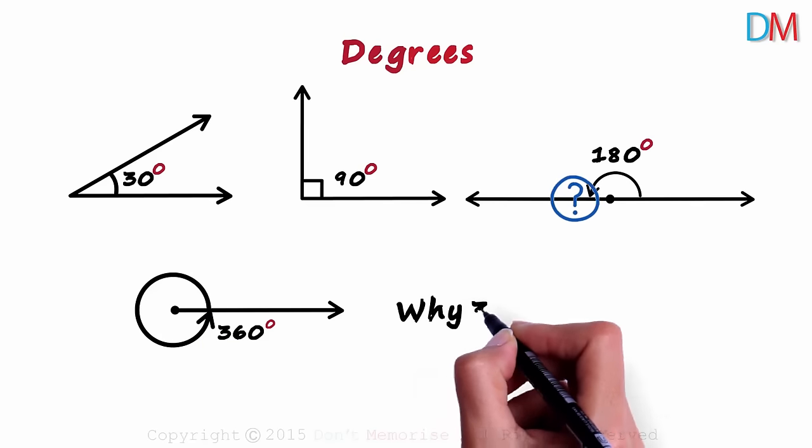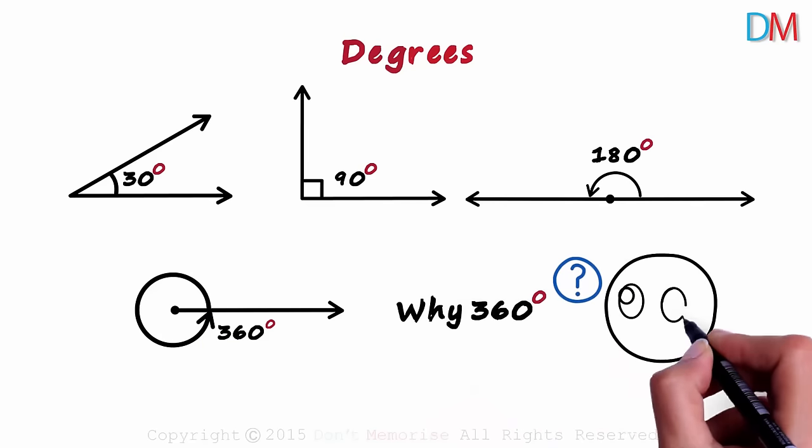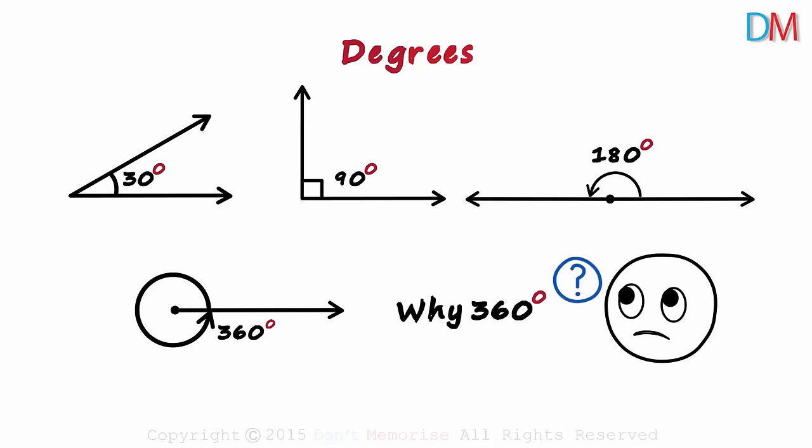Do you know why 360 degrees? It's somewhat arbitrary and had something to do with the base 60 number system. Do we have some other way in which we can measure angles such that it makes a little more sense?